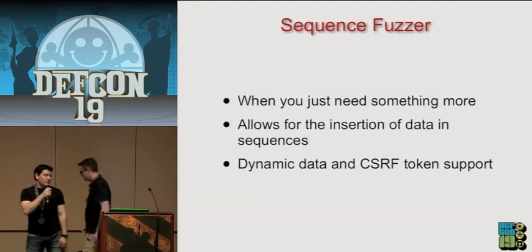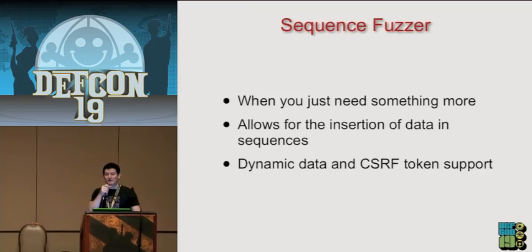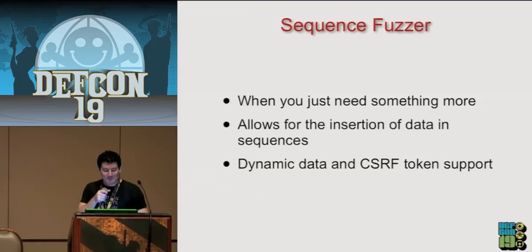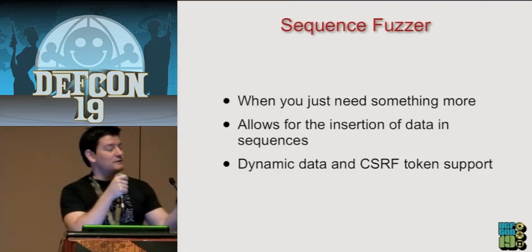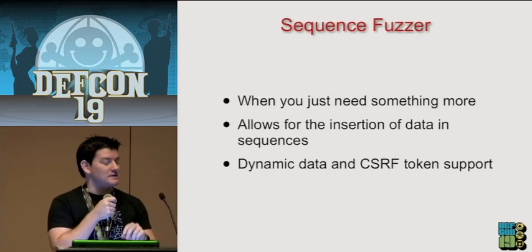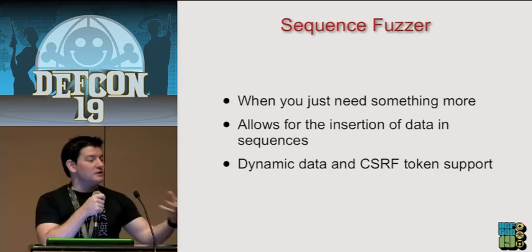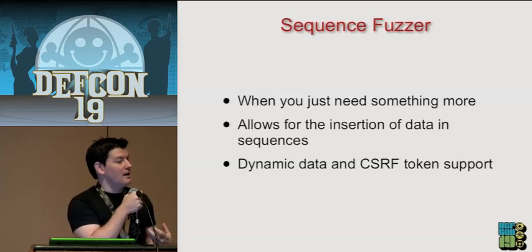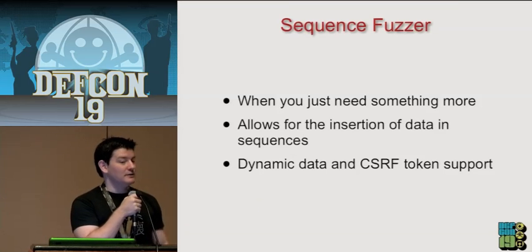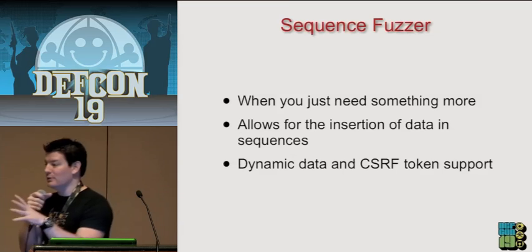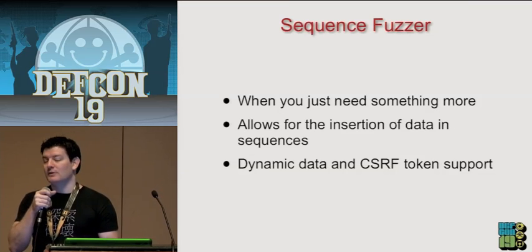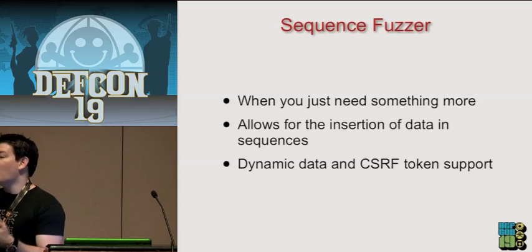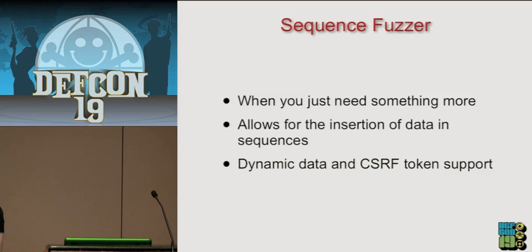We're going to have a sequence fuzzer. That sequence fuzzer will allow you to tag data in sequences — we call it dynamic data replacement. You can import a sequence of events, tag that elusive CSRF token that's making all of your requests fail, and place it into your payload. Now all of those previous tests that were failing will become successful.